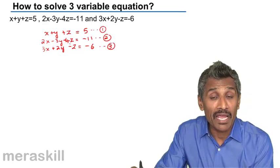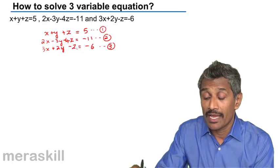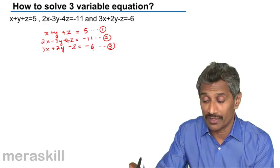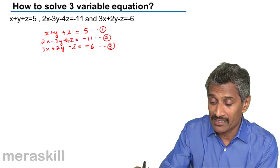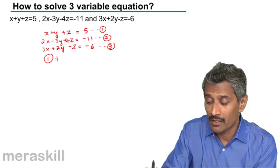Try to find out a pair of equations which can be eliminated and worked upon to obtain an equation in two variables. If you see, z and minus z could get cancelled, so you add equations 1 and 3.